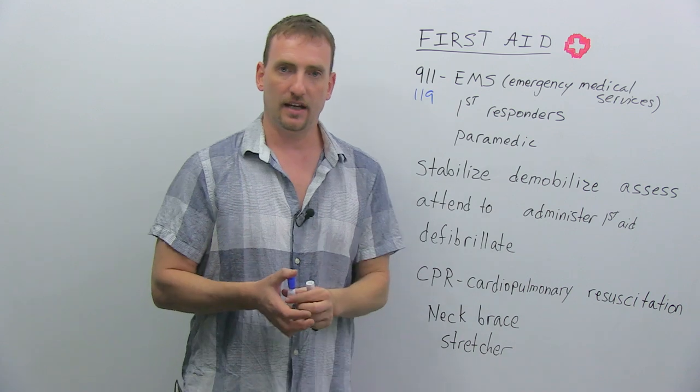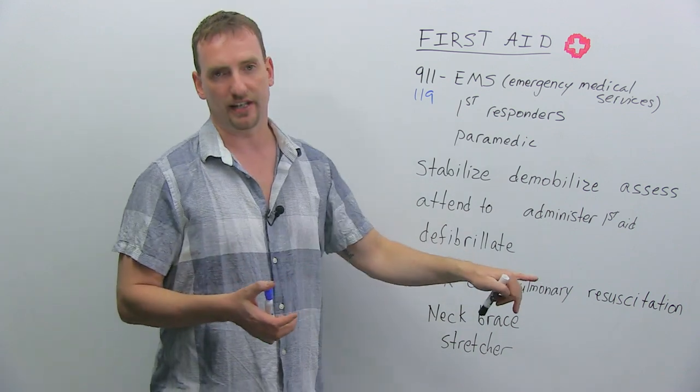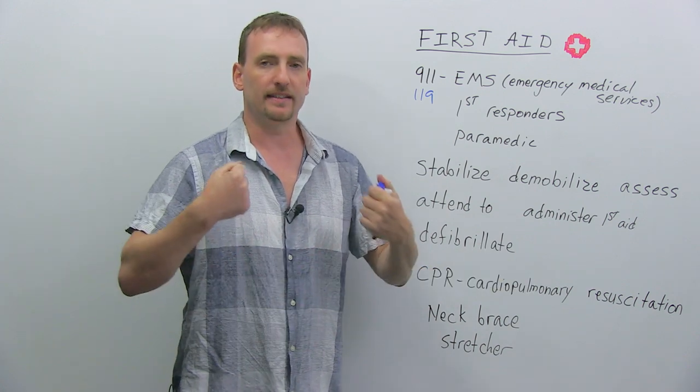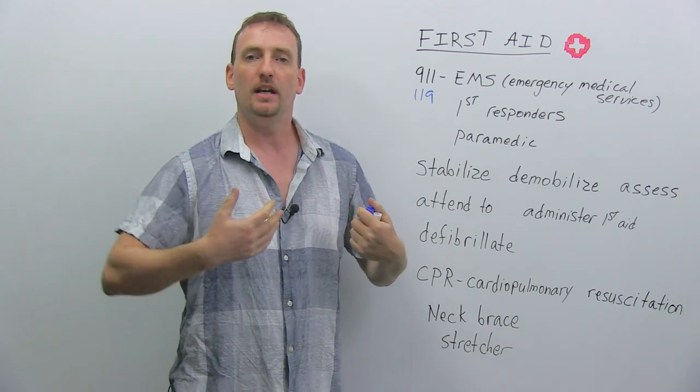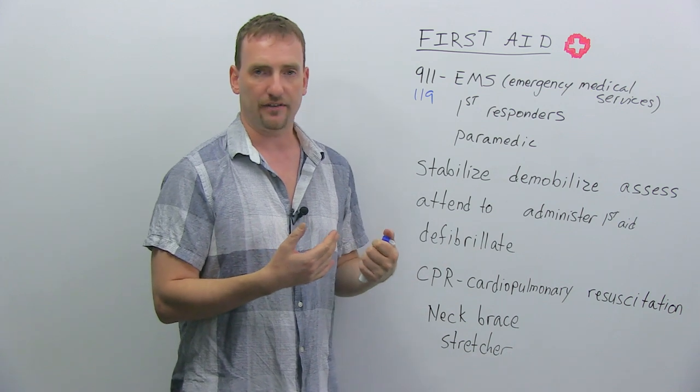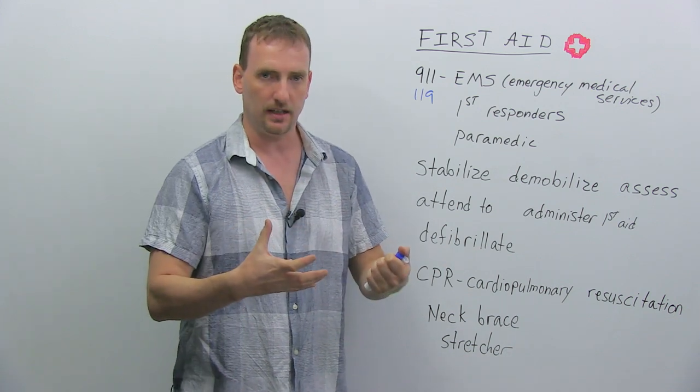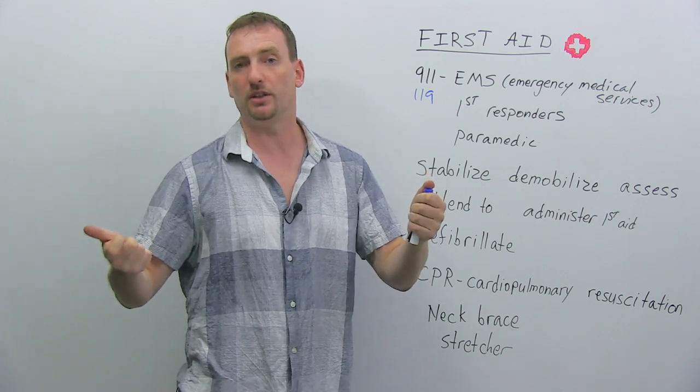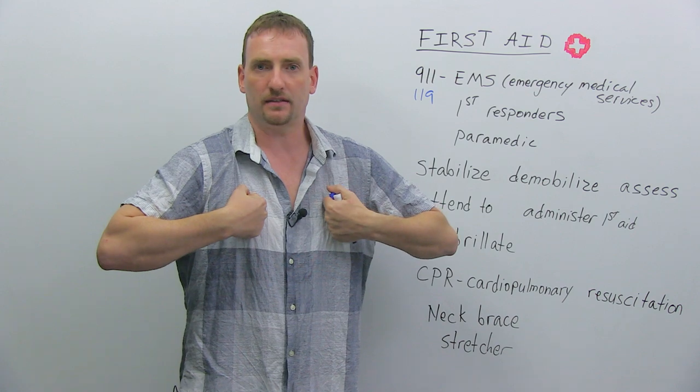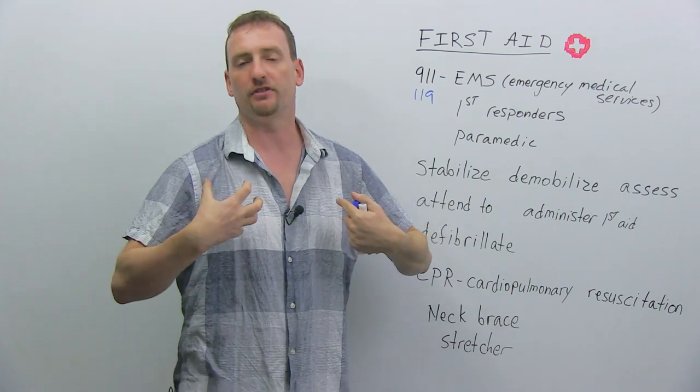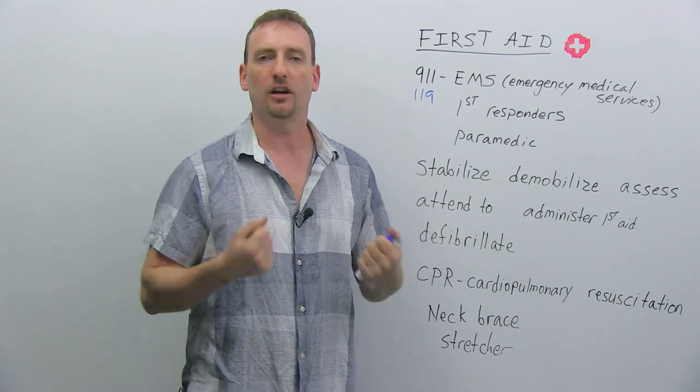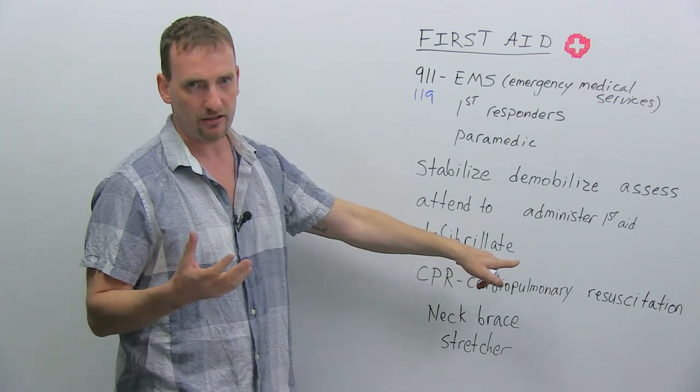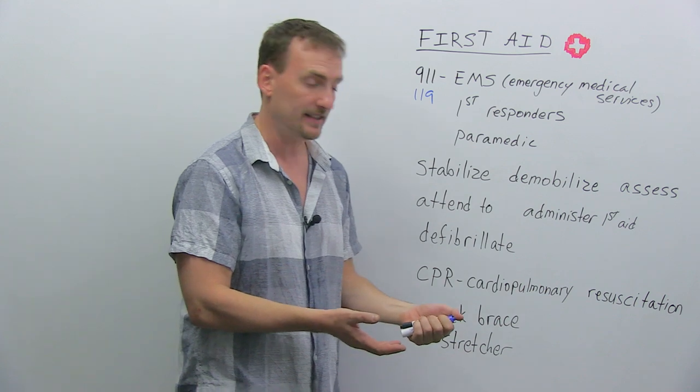Now, in some cases, they're going to have to defibrillate. They're going to use a defibrillator. This is a machine that sends an electric shock into the body. So, if someone's having a heart attack, for example, and their heart just stops beating, they're going to take the two paddles, they're going to charge the machine with electricity, going to put them two paddles and send electricity into the body, get that heart pumping again. So, this machine is called a defibrillator. The action is to defibrillate.